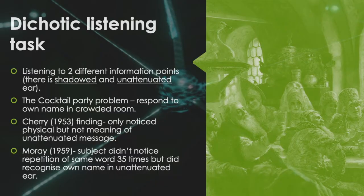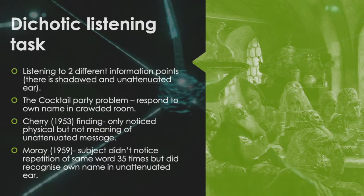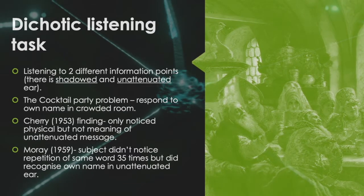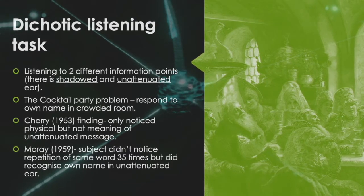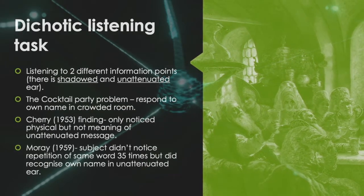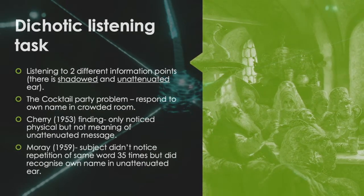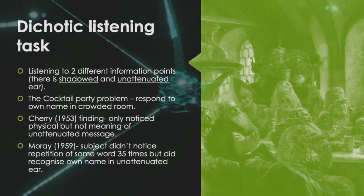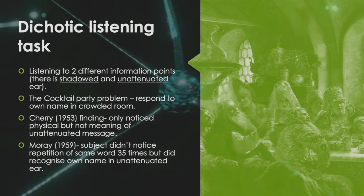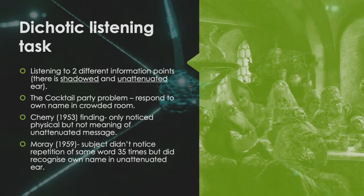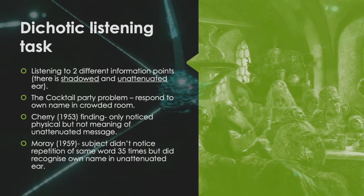The dichotic listening task involves listening to two different information points, and there is a shadowed and unattended ear. This is usually done in the context of the cocktail party problem, whereby there is often a lot of chatter and noise, but as soon as someone says your name, you're able to shift attention towards whoever said your name.